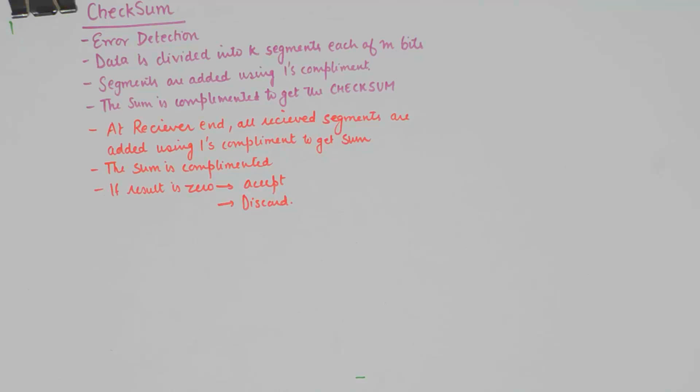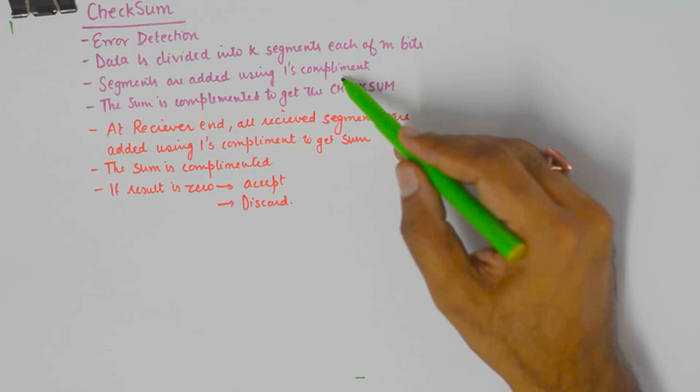Checksum is a technique to detect error only. In Checksum the data is divided into k segments each of m bits and the segments are added using one's complement. The sum is further complemented to get the Checksum.